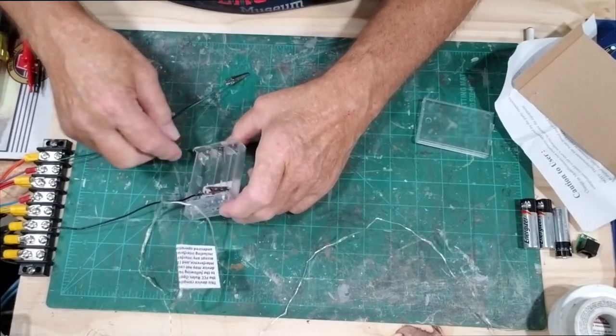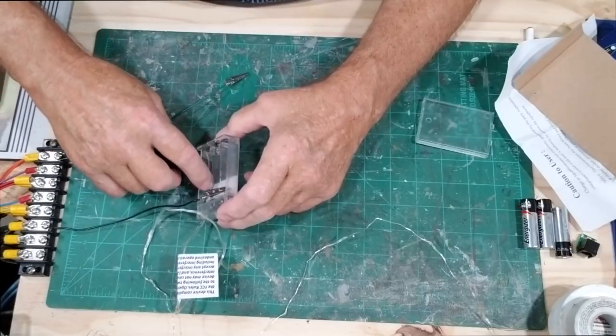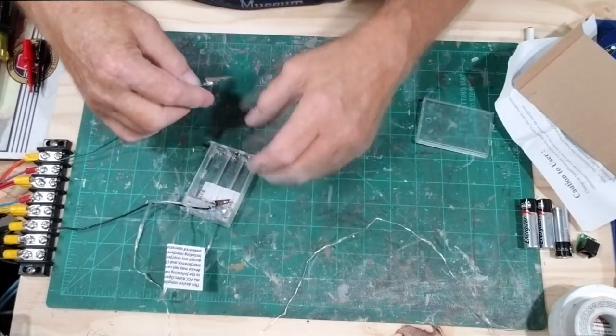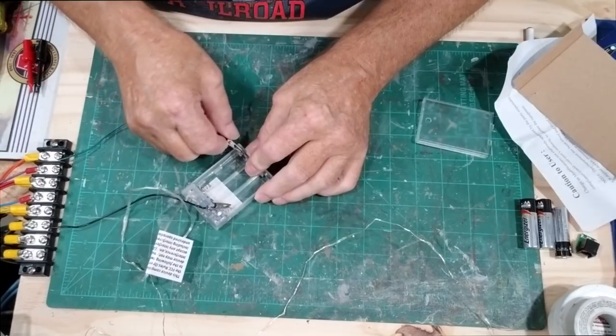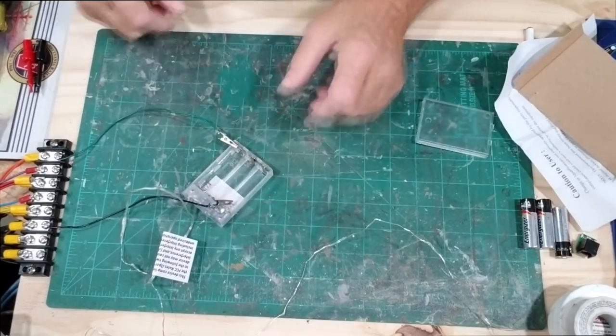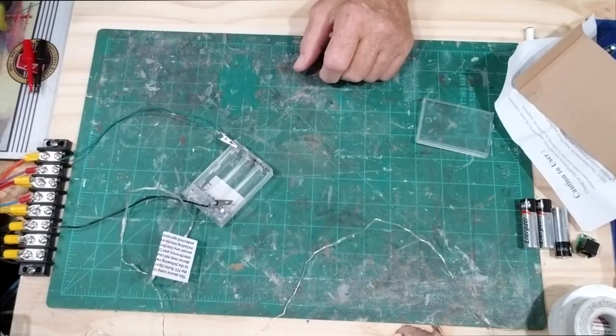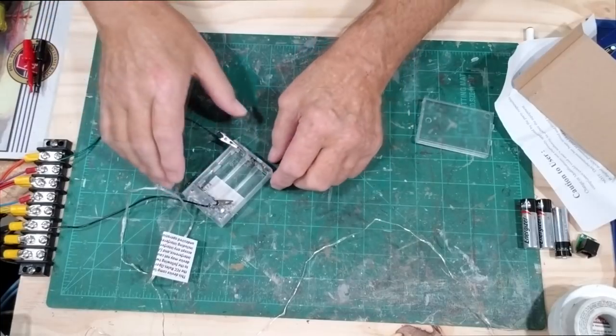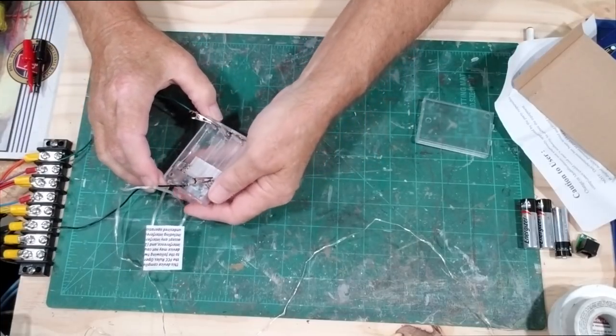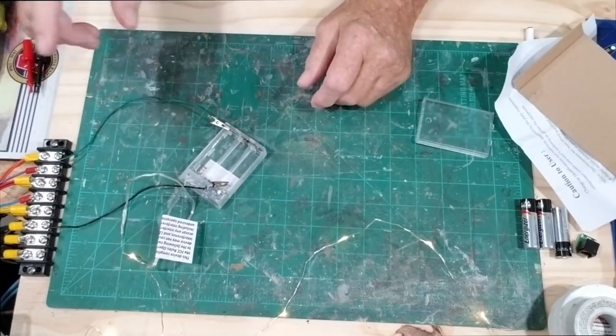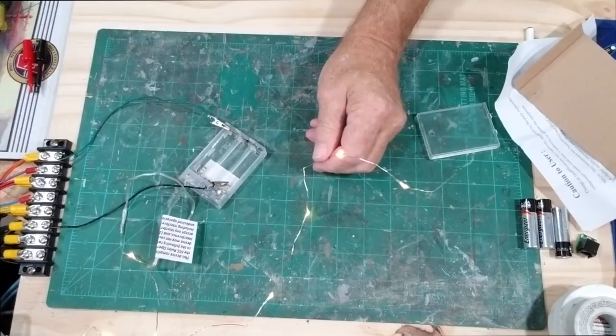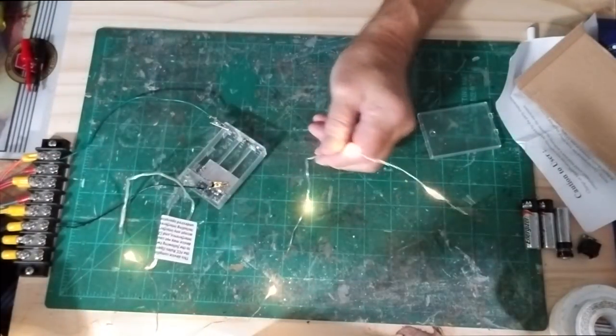I have some alligator clips hooked up to my power supply. The black one here is the negative side and your power goes through there through the batteries. Over here is the positive side. I'll turn the power on and you can see now this is 3.4 volts.